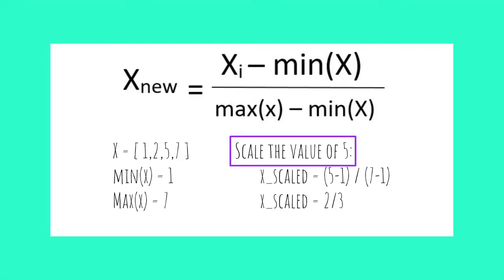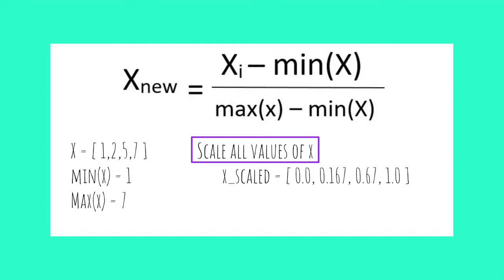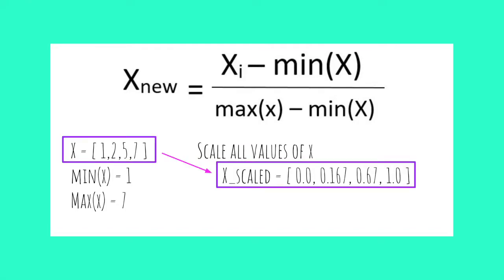We will have to scale each number, but let's say we want to scale the number five, which represents the third element in the list. We plug in five as the value we are scaling, one as the minimum value, and finally seven, which is the maximum value from that list. This returns a scaled value of two-thirds. After we scale each number in the list, we end up with this new list of scaled values. Notice the smallest item in the original list was one and it transformed into zero. The largest item was seven and it transformed into one.